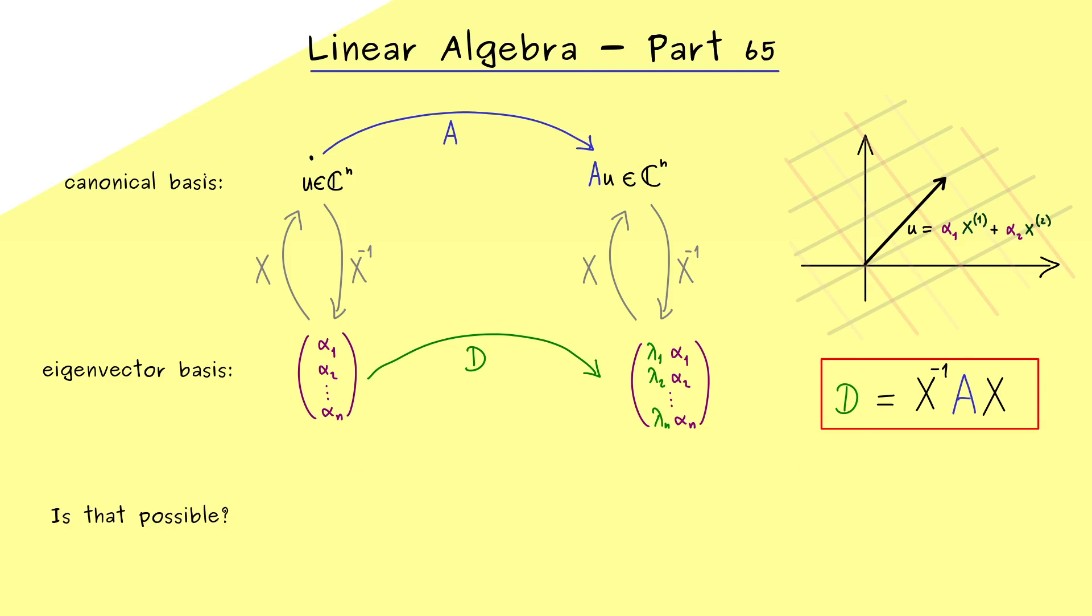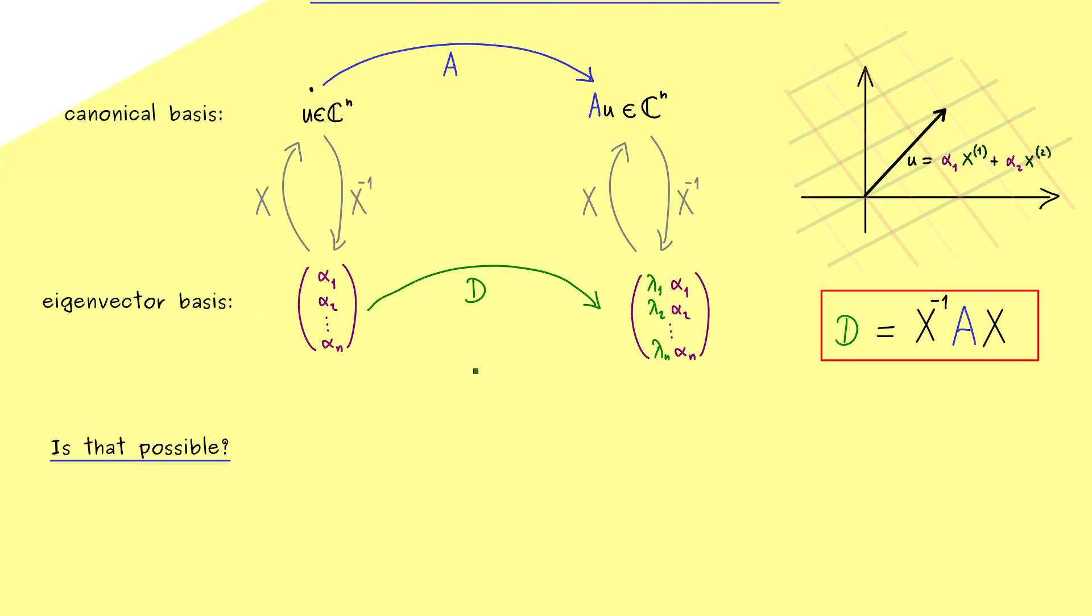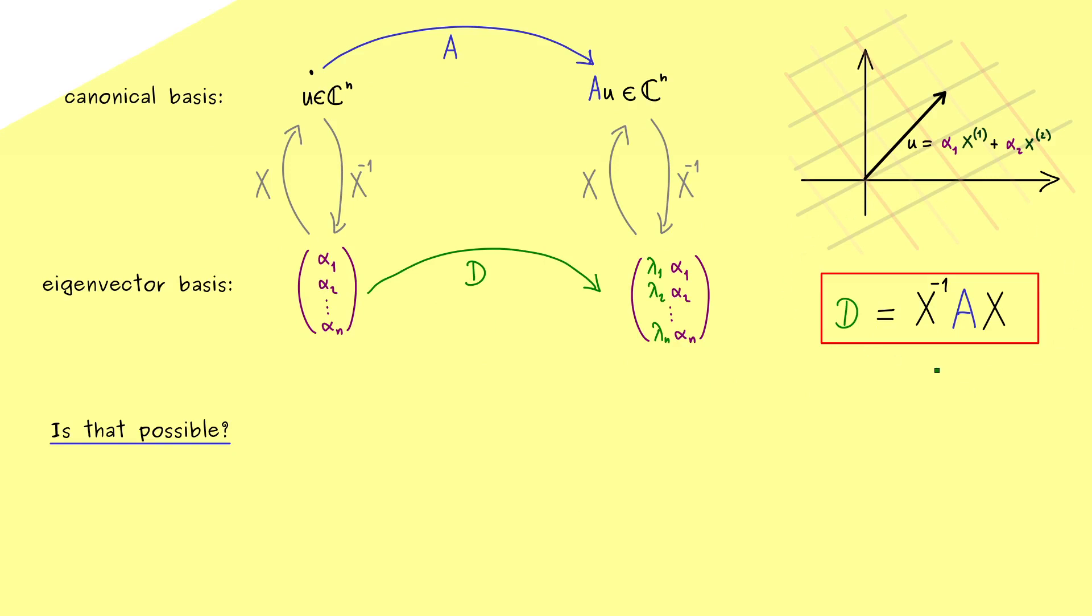And now of course the translation here on the right-hand side works exactly the same as before. So for example, if we want to go back to the canonical basis here, we have to multiply with the matrix X. In other words, here we see what we have learned in the last video, namely the diagonal matrix D is given as a matrix product. So first you have the matrix X, then you multiply A from the left-hand side, and then you multiply X inverse from the left-hand side as well.